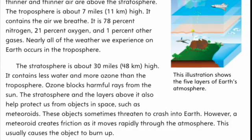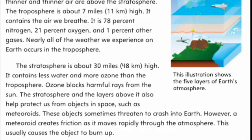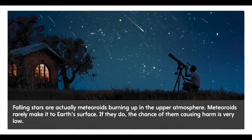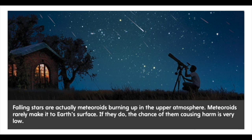This illustration shows the five layers of Earth's atmosphere. Falling stars are actually meteoroids burning up in the upper atmosphere. Meteoroids rarely make it to Earth's surface, and if they do, the chance of them causing harm is very low.